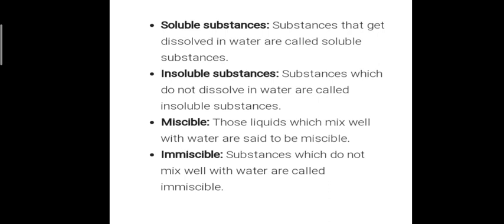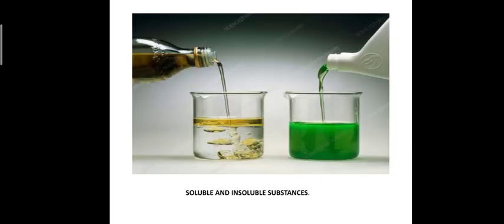Next is miscible liquids — two liquids that mix well and dissolve easily together, like alcohol and water or soda and water. Immiscible liquids are those which do not mix well with water. The best example is oil and water — when you stir oil, it floats on the surface of water because its density is less.